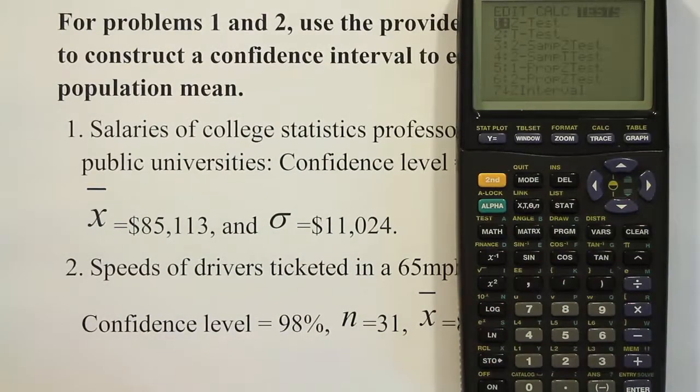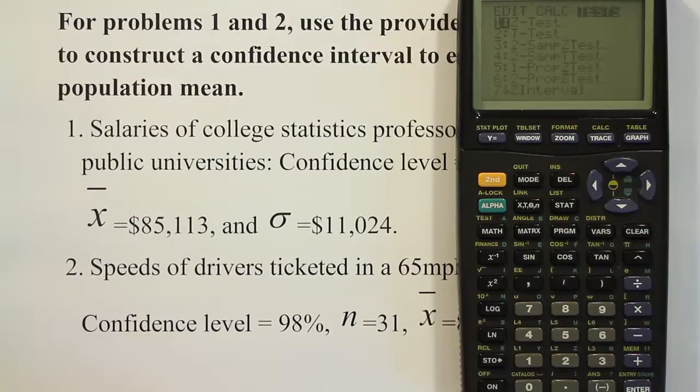Now you're going to see a few options on your screen. First you see a z test, a t test, and then a bunch of other things that say test. But if you look down at the last one in the list, it says z interval.